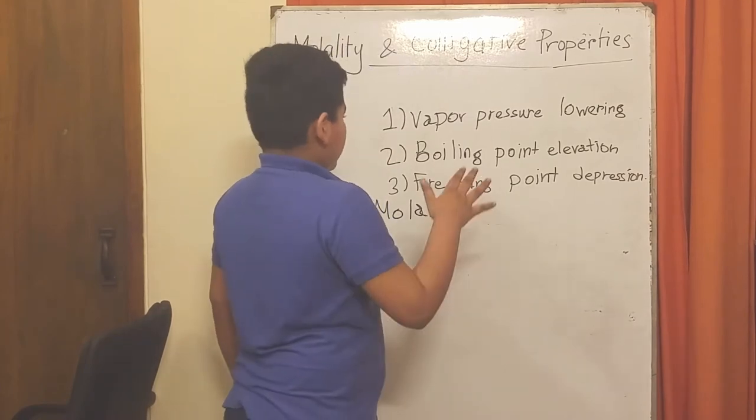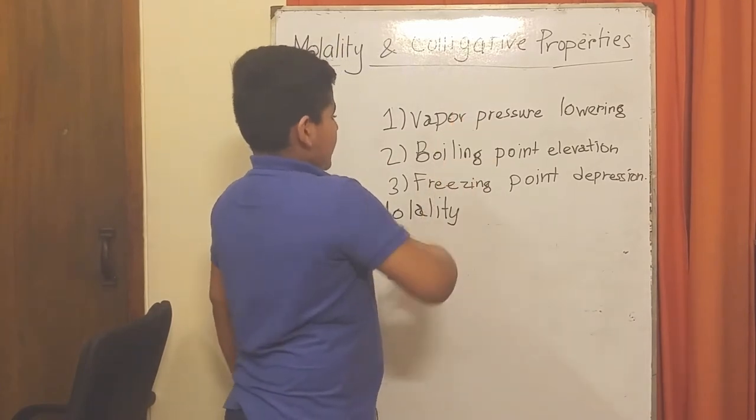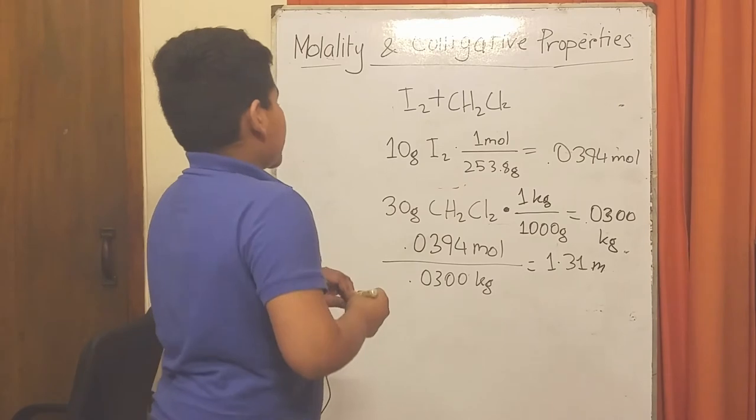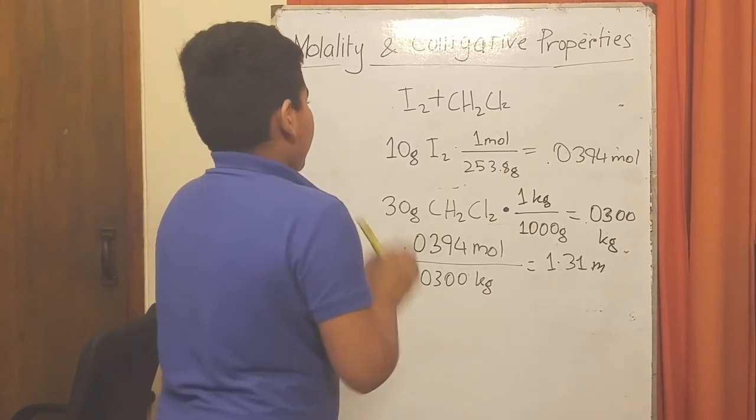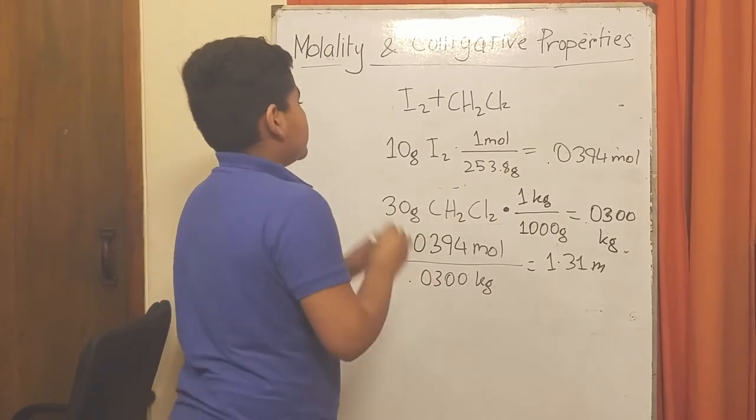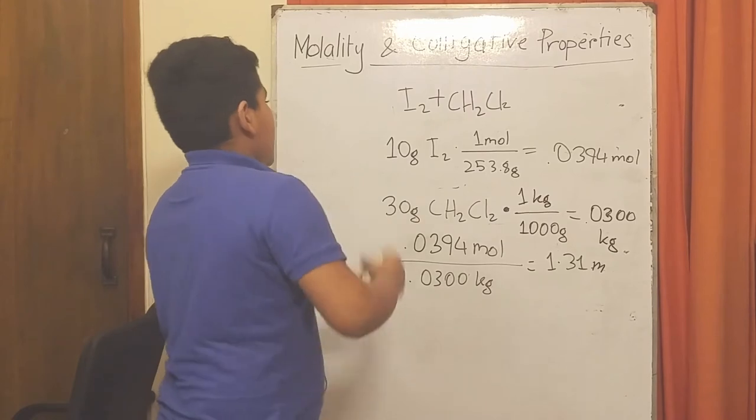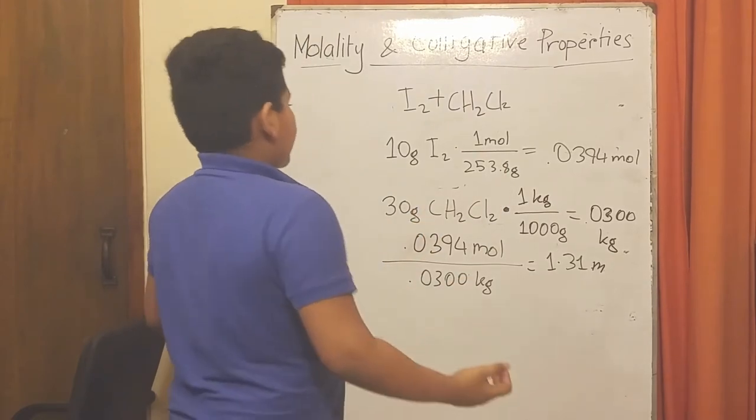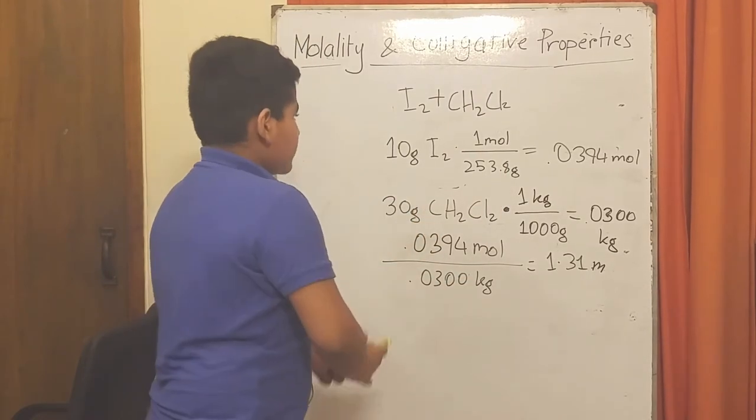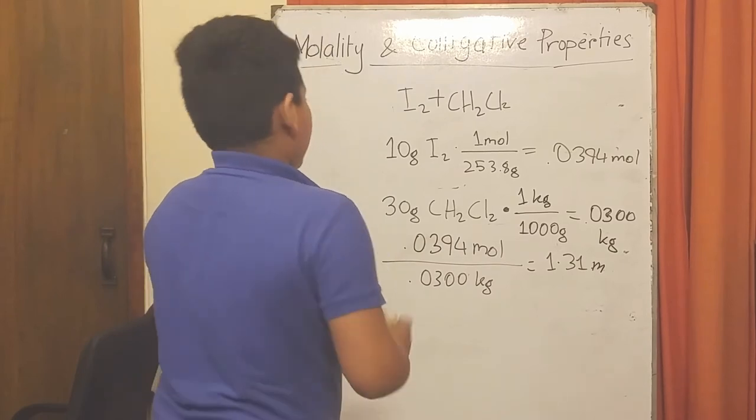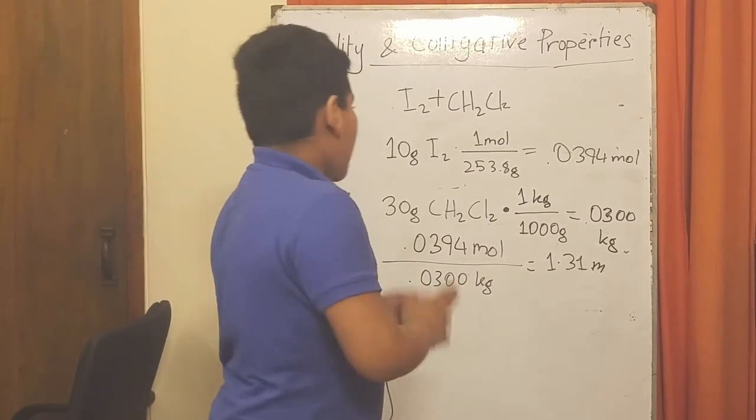Here's an example: we have iodine plus dichloromethane. Say we have 10 grams of iodine and 30 grams of dichloromethane.